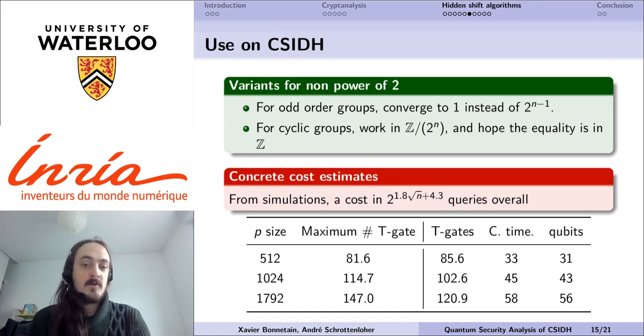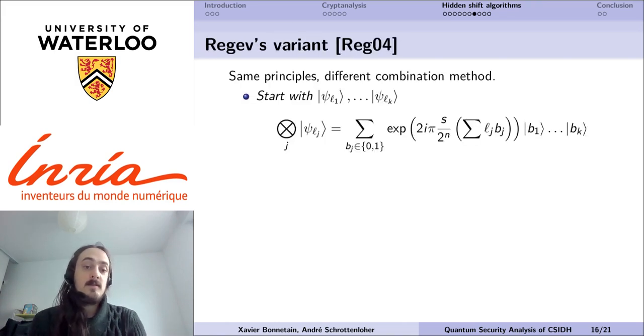For example, we can use Regev's variant. The principles are fairly similar for this variant, but the combination is different. The idea is not to use two qubits to combine, but a small number k, and we consider the tensor product of all these k labeled qubits, which corresponds to a superposition of 2 to the k values, each value having its specific phase shift.